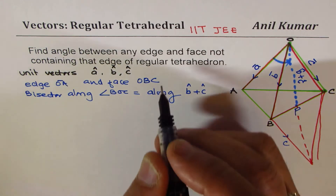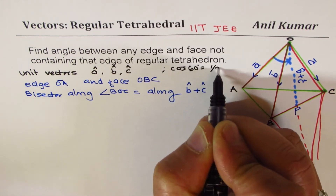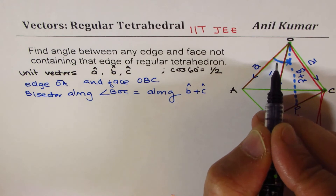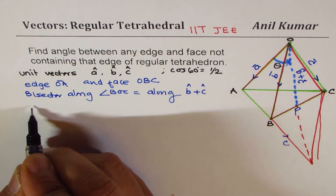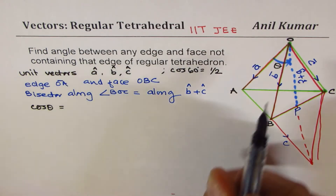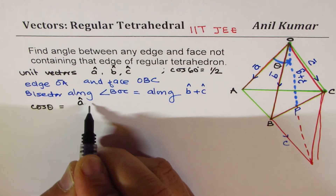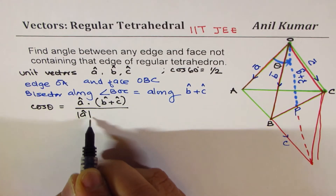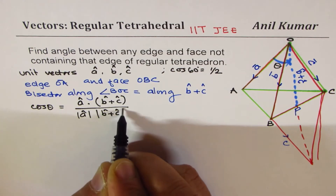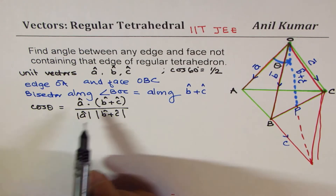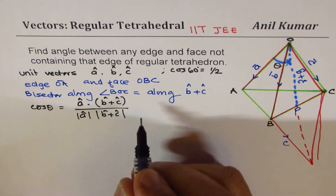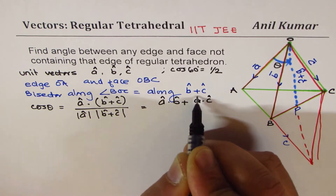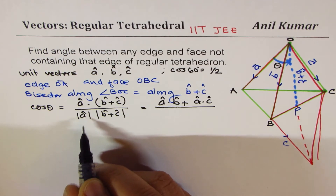Let's call this angle θ. Then cos θ equals the dot product of a and (b+c), divided by the magnitude of a times the magnitude of (b+c). Expanding the numerator gives a·b + a·c, and the magnitude of a is 1, so we just need to find the magnitude of (b+c).